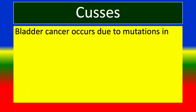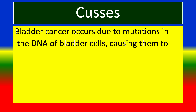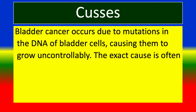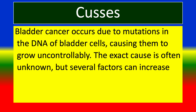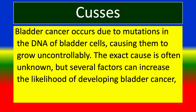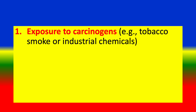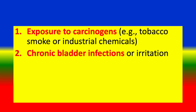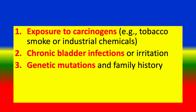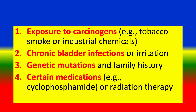Causes: Bladder cancer occurs due to mutations in the DNA of bladder cells, causing them to grow uncontrollably. The exact cause is often unknown, but several factors can increase the likelihood of developing bladder cancer, including: 1. Exposure to carcinogens, e.g. tobacco smoke or industrial chemicals. 2. Chronic bladder infection or irritation. 3. Genetic mutations and family history. 4. Certain medications, e.g. cyclophosphamide, or radiation therapy.